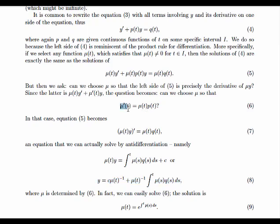μ is determined by this equation here, which is easily solved. If you look at this equation, you can think of it as dμ/μ equals p, so the anti-derivative log μ is the anti-derivative of p, and so μ is e to the anti-derivative of p, which is what we've written here in equation nine.